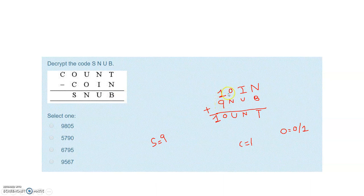With S equals 9, in the leftmost column either 9+1=10 or 9+2=11. So the letter O can only be 0 or 1. But C is already equal to 1, and in cryptarithmetic different letters cannot share the same value. Therefore O cannot be 1, and O must equal 0.